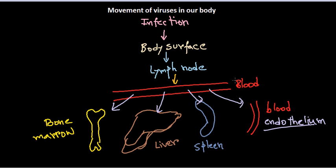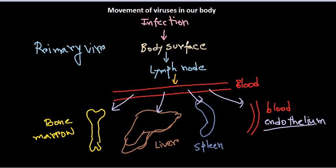These are the different routes of movement: into bone marrow, liver, spleen, and the blood vessel endothelium. This initial response — the movement of viruses through lymph nodes via blood vessels into bone marrow, liver, spleen, and endothelium — is called primary viremia. This is the clinical condition of primary viremia.